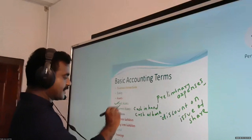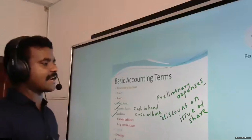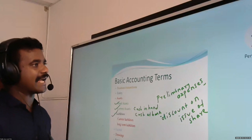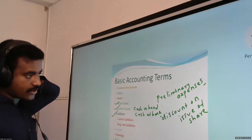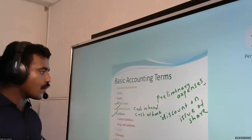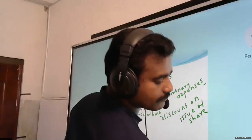Next is liabilities. Liabilities refers to the amount which a business owes to others, either for money borrowed or for goods and services purchased on credit. That is liabilities.